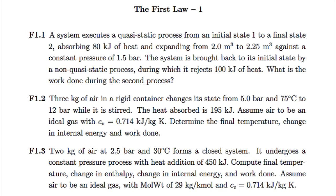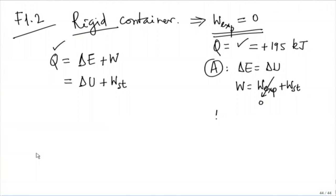We are asked to assume air to be an ideal gas with Cv given. Since air is an ideal gas, we can write delta U equals m into Cv into delta T, that is T2 minus T1, and T2 can be calculated.